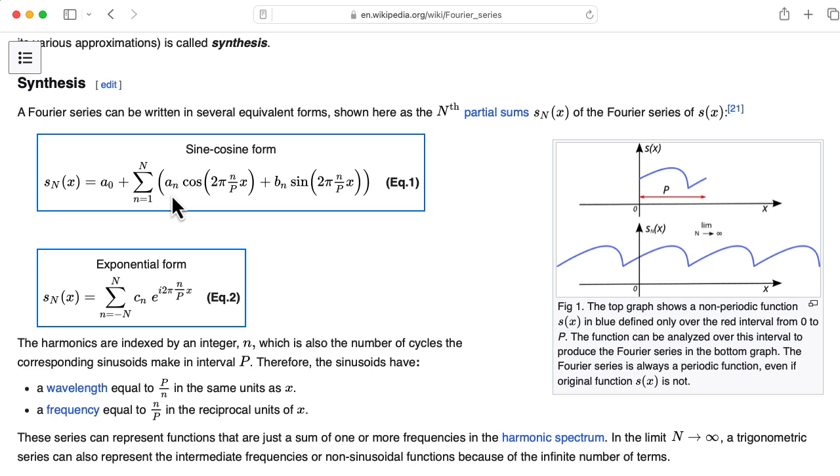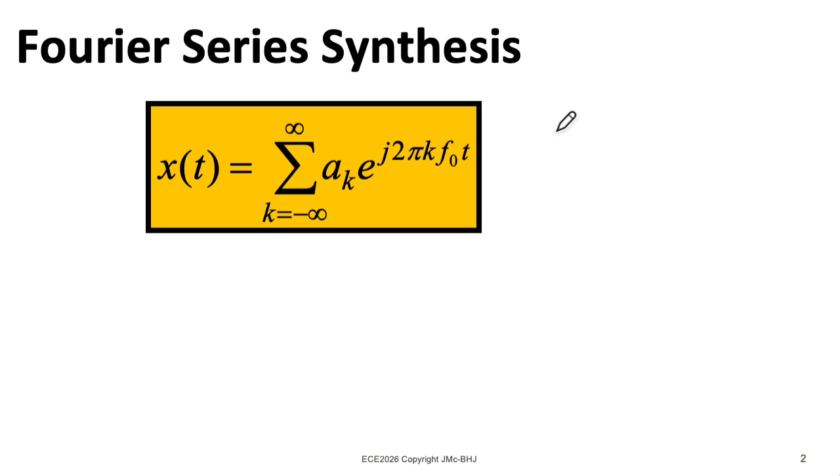Sometimes people like to represent a Fourier series in terms of separate cosine and sine terms, where the cosines and the sines have their own coefficients. In EC2026, we generally stick with this complex sinusoid form.